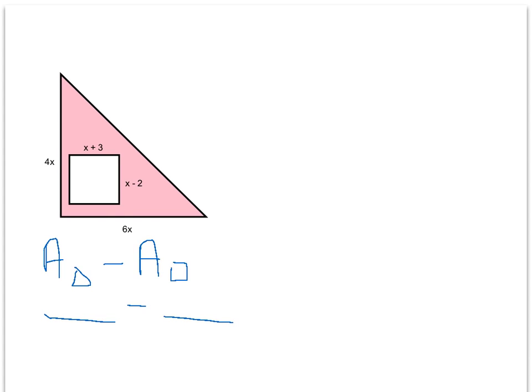Let's start with the big shape, finding the area of the triangle. To find area of a triangle, it's base times height divided by 2, or one half base times height. So I'll have one half times 4x times 6x. Well, 4x times 6x is 24x squared, and one half times 24x squared is the same thing as 24x squared divided by 2, which gives me 12x squared. So the area of the triangle is 12x squared.